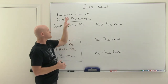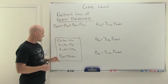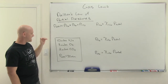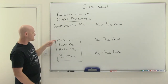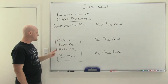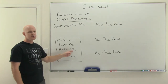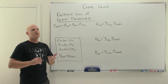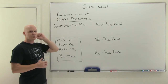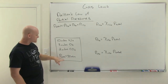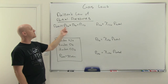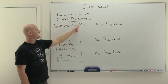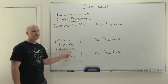We're going to start with Dalton's law of partial pressures and look at the questions below. The first question deals with a rigid container that has 10 moles of N2, 8 moles of O2, and 2 moles of CO2 in it with a total pressure of 50 atmospheres. What Dalton's law of partial pressures says is that this total pressure of 50 atmospheres is equal to the partial pressure of the nitrogen, the partial pressure of the oxygen, and the partial pressure of the CO2.